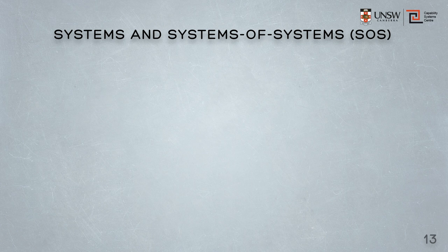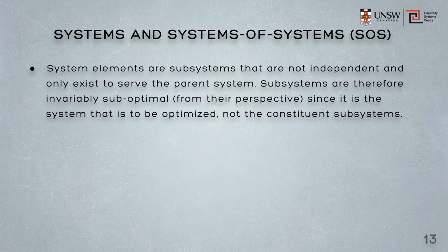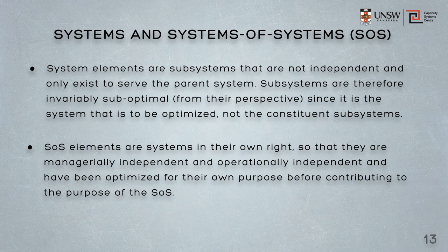So if the system of systems and the system both comprise elements that are interconnected, how then are they different? Why do we give them two different names? Well, in the system, the subsystems are not independent. They only exist to serve the parent system, and they're invariably suboptimal, from their perspective at least, since it's the system that's to be optimised, not the constituent subsystems. On the other hand, the system of systems elements are systems in their own right, so they are managerially independent and operationally independent, and they have been optimised for their own purposes before contributing to the purpose of the system of systems. They'll also have an independent life cycle, and they'll probably be procured independently.